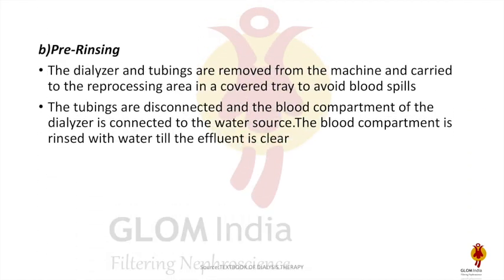For pre-rinsing, the dialyzer and tubing are removed from the machine and carried to the reprocessing area in a covered tray to avoid blood spills. The tubings are disconnected, the blood compartment of the dialyzer is connected to the water source, and the blood compartment is rinsed with water until the effluent is clear.